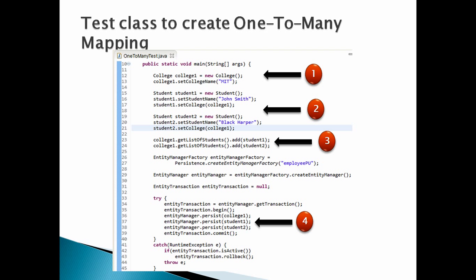Number three: add both students to the list of students present in the college entity. This will tell Hibernate that college MIT has two students — John Smith and Black Harper. Number four: call the persist method of entity manager to persist college one, student one, and student two instances. This will create the college and student tables in the database and persist the above values into them.